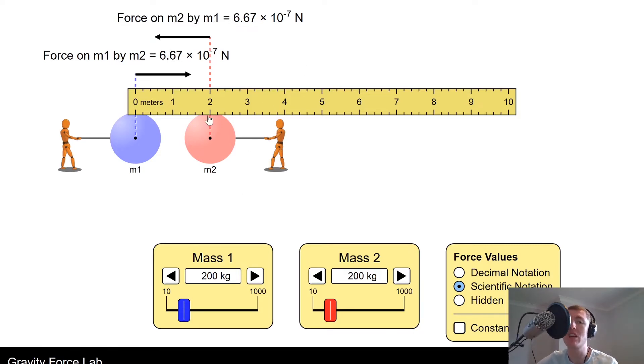If we double this distance from 2 meters to 4 meters, then by the inverse square law, we should expect that the force values will quarter because we're doubling the distance. That's because F, the gravitational force of attraction, is proportional to 1 over the distance squared, 1 over r squared.